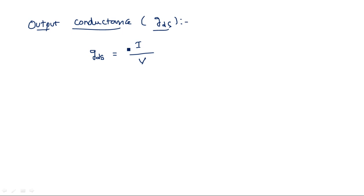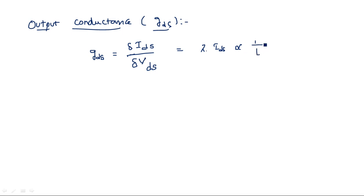Both parameters belong to the output side. Output current is Ids and the output voltage is Vds. So Gds equals delta Ids by delta Vds — the rate of change of current to the rate of change of voltage. This output conductance Gds can be written as lambda times Ids, which is proportional to 1 by L squared. Lambda is proportional to 1 by L and Ids is also proportional to 1 by L.